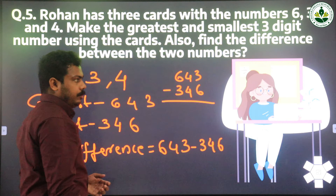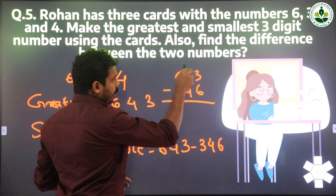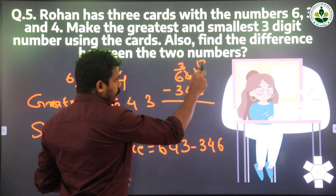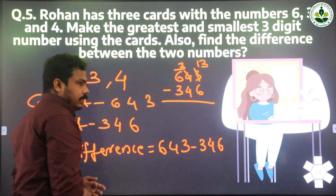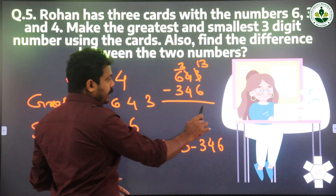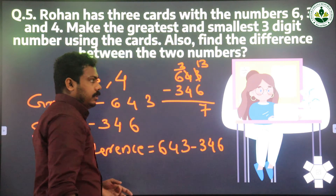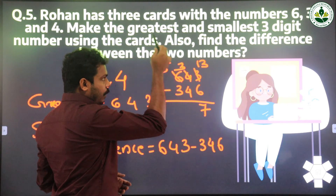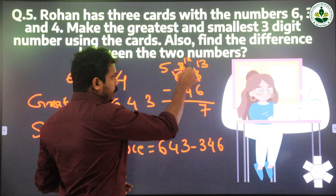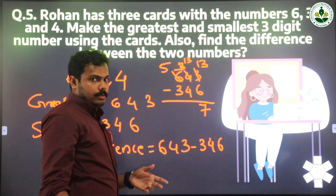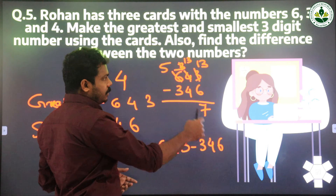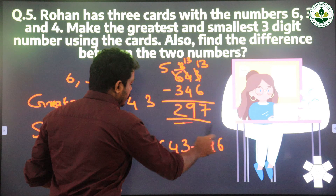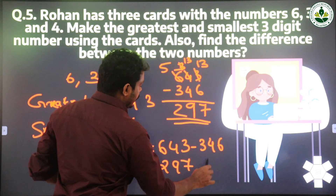3 minus 6 is not possible, so we take 1 from the next place. It becomes 3, and this 3 becomes 13. 13 minus 6: 6 plus 7 is 13, so write 7. Then 3 minus 4 is not possible, so we take 1 from 6 — 6 becomes 5, and this 3 becomes 13. 13 minus 4: 4 plus 9 is 13, so write 9. Then 5 minus 3 is 2. So the answer is 297.